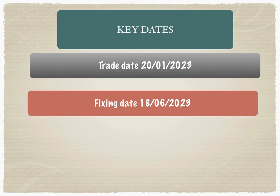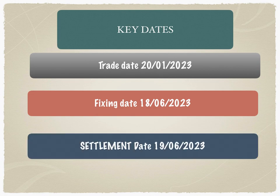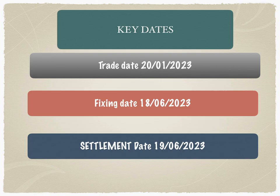The trade date captures key data points like the notional amount and the counterparty obligation. The second key date is the fixing date — 18th June 2023. This is derived from the trade date plus the NDF tenor, in this case six months. The settlement date is 19th June 2023, and the fixing date is one day prior. On the fixing date, the fixing rate is locked in and profits and losses are calculated.